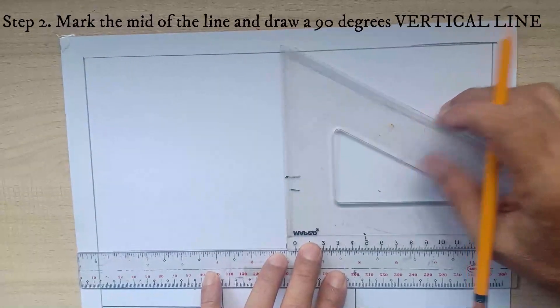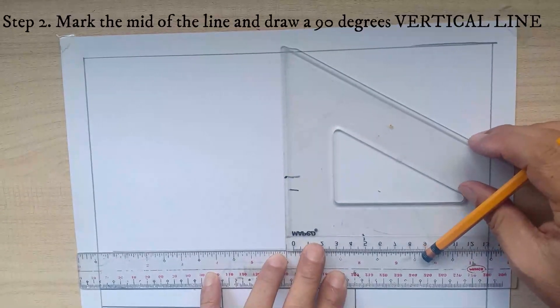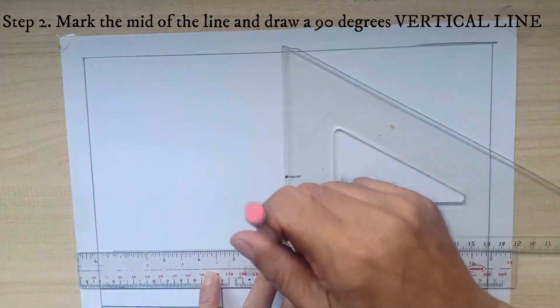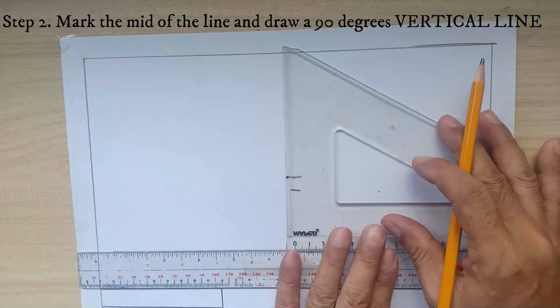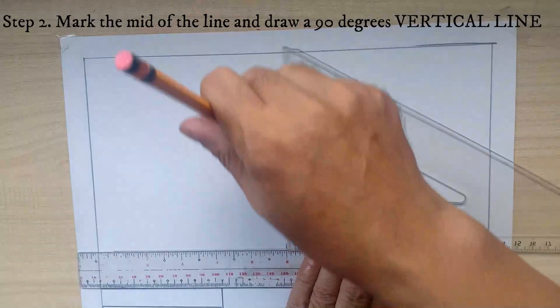And then draw a vertical line, a 90 degrees vertical line using your ruler and your triangle.